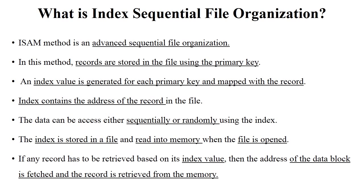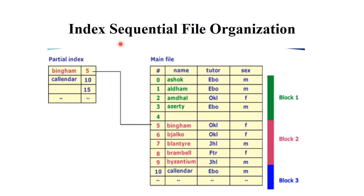Here is an example of index sequential file organization. This is the front view showing the student name and roll number of a particular student. When you click on this file, you move to that record where the complete details of that particular student are saved.